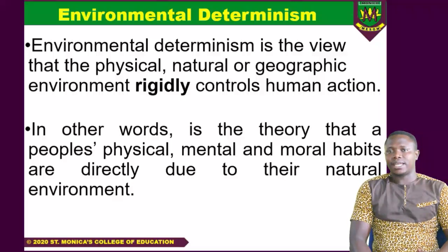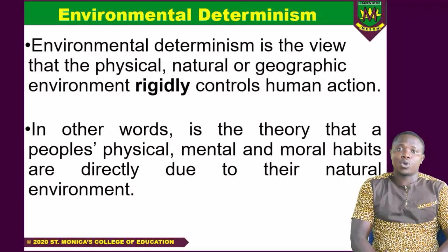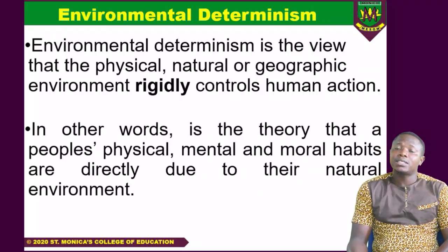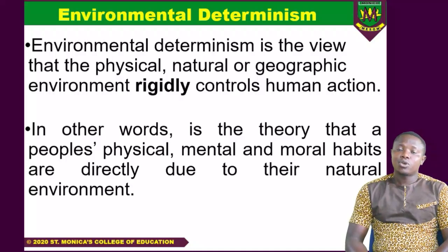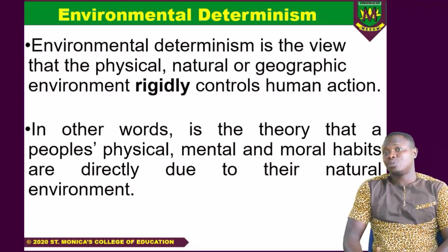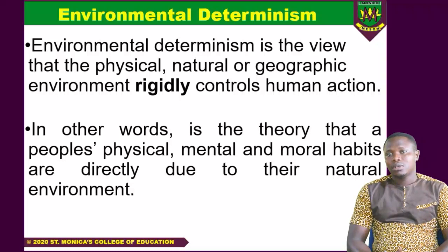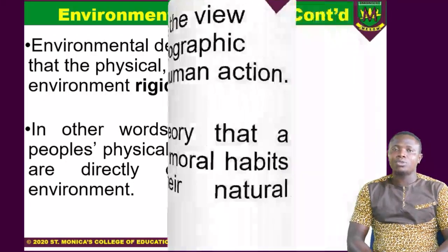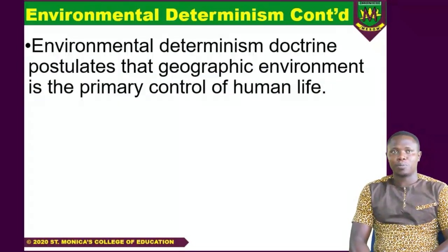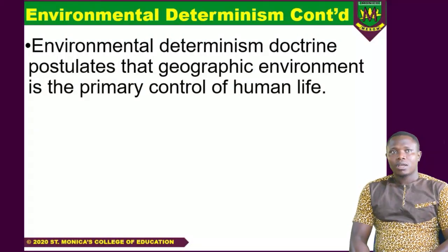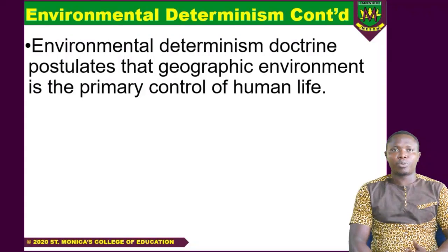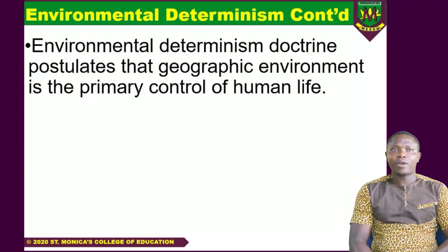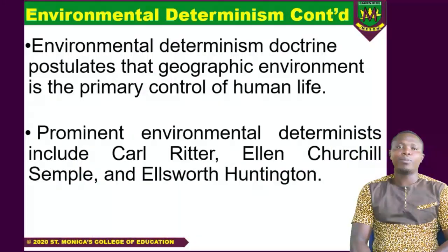So this is what they are saying: that your environment will influence your existence. It could be the food you eat, the clothes that you put on, the culture or even kinship. The environment can influence your behavior. That is according to environmental determinism. The environmental determinism proponents postulate that the geographic environment is the primary control of human life.